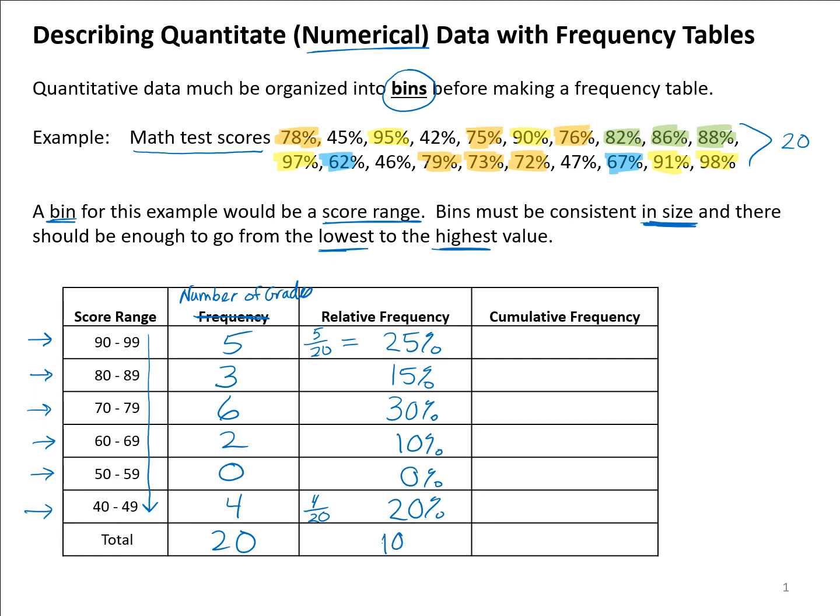Cumulative frequency is a running total. At the beginning we only have one value—5 test scores—but then in the next row down we have 3 more, so 5 plus 3 is 8. The next one down we have 6, so 8 plus 6 is 14. The next one down we have 2 more, so that would be 16.